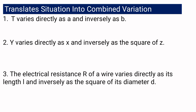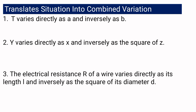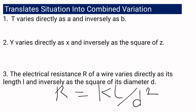And lastly, the electrical resistance r of a wire varies directly as its length l and inversely as the square of its diameter d. Translating into an equation, it is written as r equals kl over d squared.